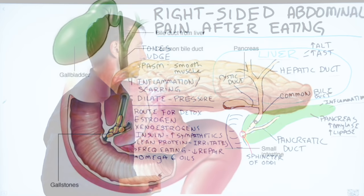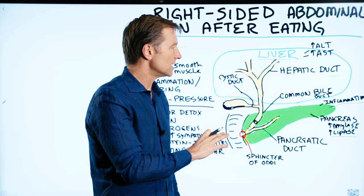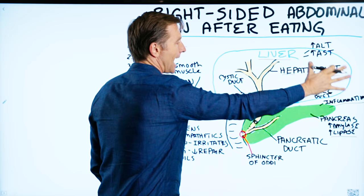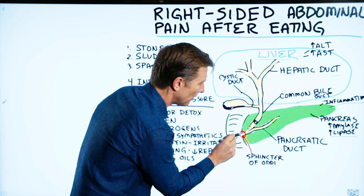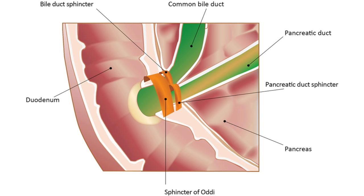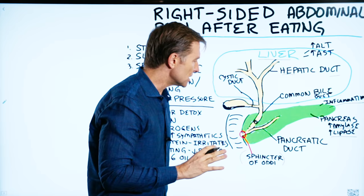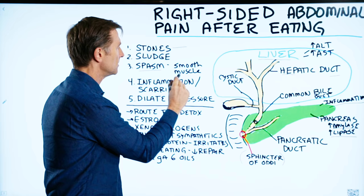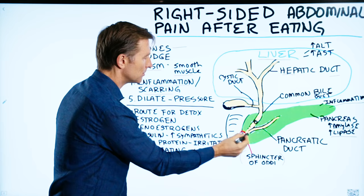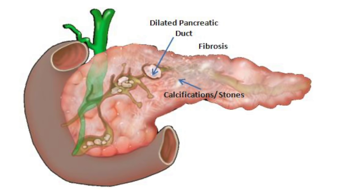When enzymes back up, they can create a lot of inflammation. There's a tremendous effort to classify all the different problems that can happen — for example, there's a tiny valve or sphincter called the sphincter of Oddi, and there's an entire condition called sphincter of Oddi dysfunction. There's a lot of terminology describing different things that can go wrong: spasms in smooth muscle, inflammatory conditions, scarring, fibrosis, dilation of the ducts — all of which increase pressure and cause pain.